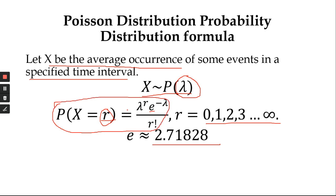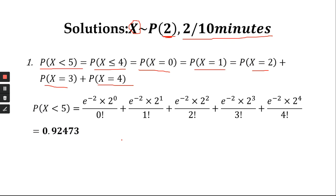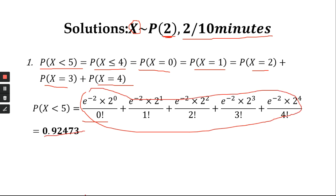Lambda is known, E is the Euler constant, and we substitute each value of R (0 through 4) into the formula. What changes is R — Lambda is fixed and E is the same constant. We compute each probability using a calculator with E to the power minus 2, then add all results together. Adding all these gives a probability of 0.9473.